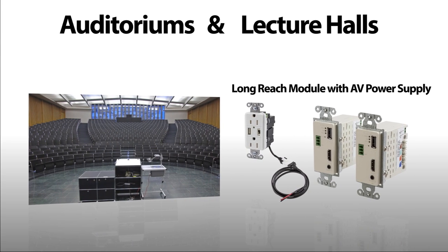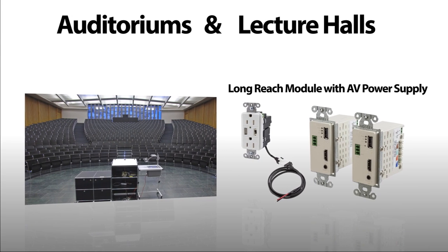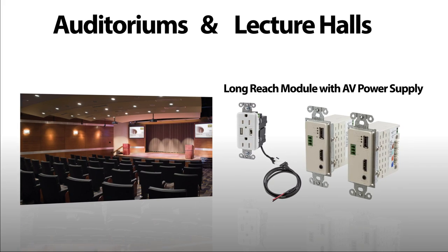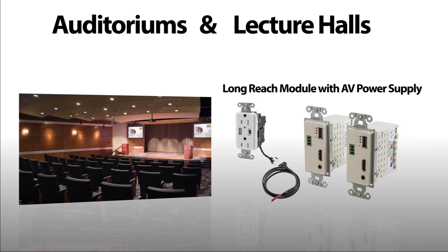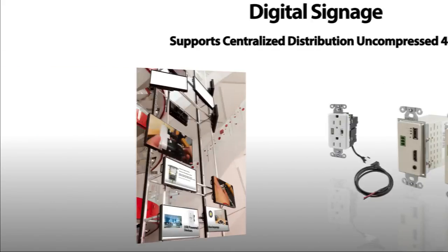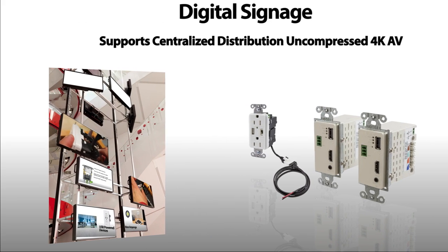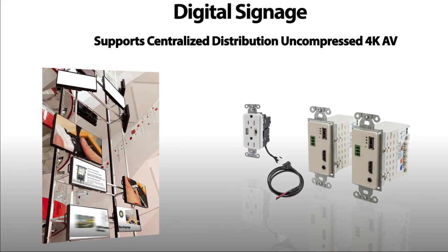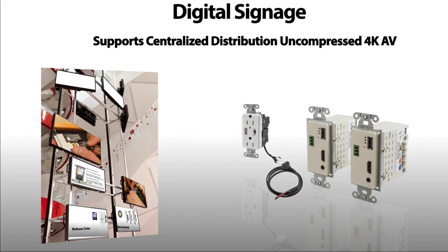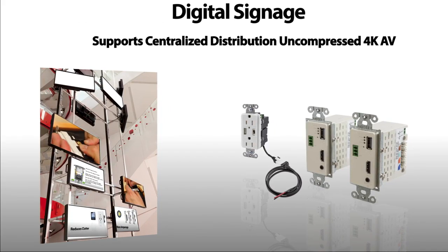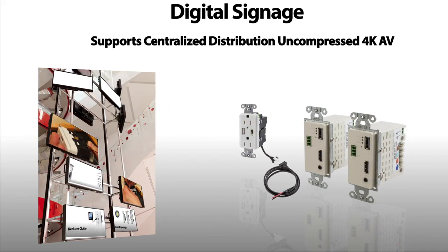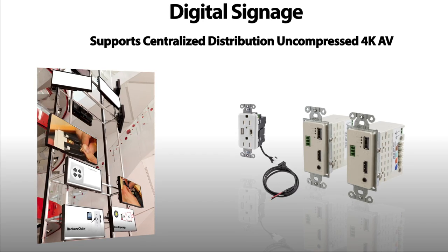Hubble's long-reach modules allow you to easily accommodate the long distances associated with auditorium and lecture hall installations. Hubble's long-reach HDMI modules enable centralized distribution of uncompressed 4K video, audio, and control signals, when combined with HDMI distribution switches and amplifiers at the source end.